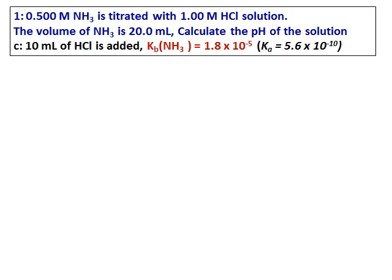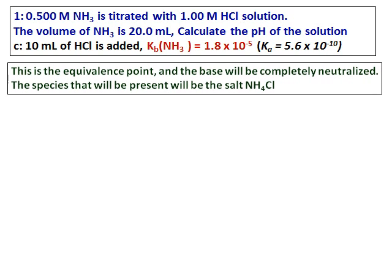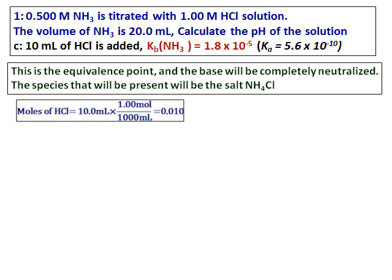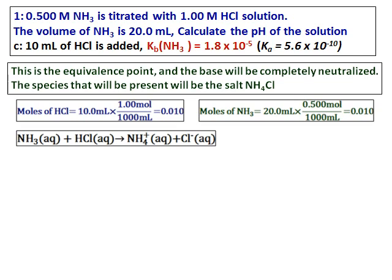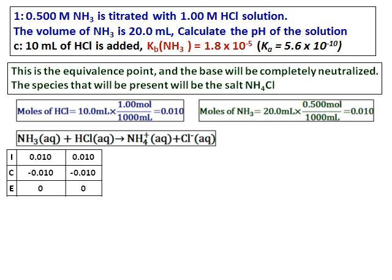For part C, I am adding 10 mL of hydrochloric acid. This is the equivalence point, so all the base will be completely neutralized. The pH of the solution is determined by the salt, ammonium chloride. Calculate the moles of hydrochloric acid and moles of ammonia. When you set up the ICE table for the ammonia–HCl equation, you realize that ammonia gets totally neutralized by hydrochloric acid.